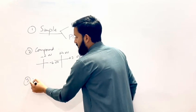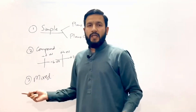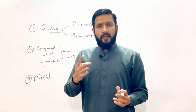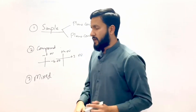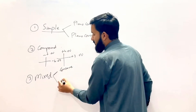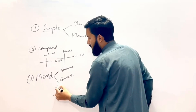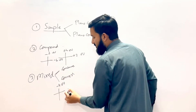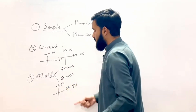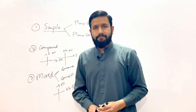The third type is mixed cylindrical lens. Here, curvature is present in both meridians, but one is concave and the other is convex. For example, if the power in one principal meridian is minus four, then in the other principal meridian the power will be plus four. So the curvature is different — one minus and the other plus.